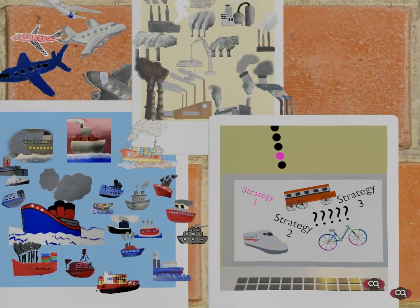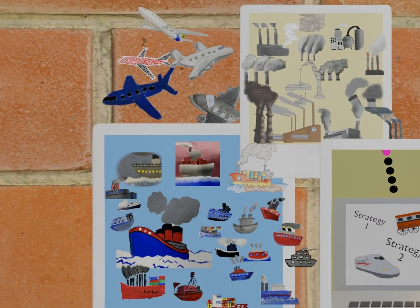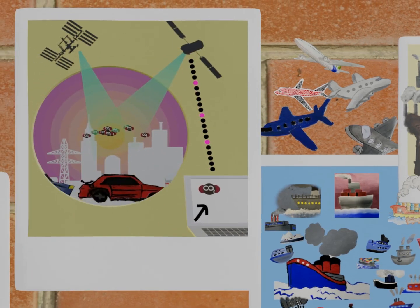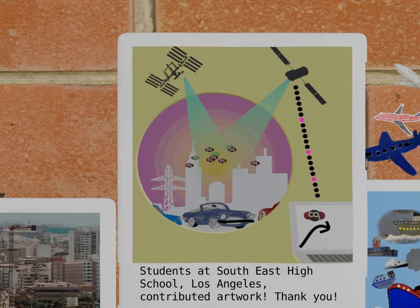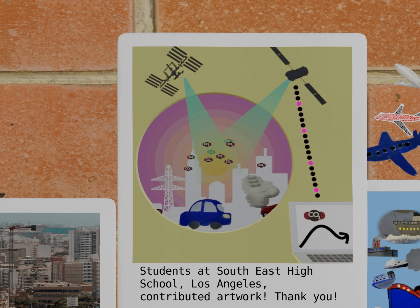They could do this not just for cars, but for industry, ships, and other major sources of CO2. Detailed data enables action. It's the future NASA is working towards.